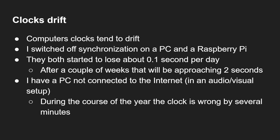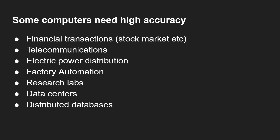Computer clocks tend to drift because they're not a very expensive part. I switched off synchronisation on a desktop PC and on a Raspberry Pi, and they both started to lose about 0.1 seconds per day, which means after a couple of weeks they'll be about two seconds out. I have a PC not connected to the internet at all — an audio-visual setup — and during the course of the year, that clock can be wrong by several minutes. So it's very important that computers synchronise their time for all the things that we do, like emails and buying things online.